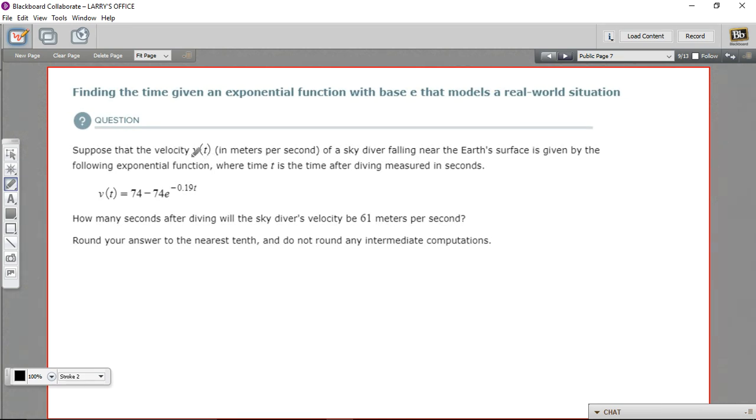It says, suppose that the velocity v(t) in meters per second of a skydiver falling near the Earth's surface is given by this exponential function, where t is the time after diving measured in seconds. So the velocity equals 74 minus 74 times e to the negative 0.19 times t power. So this equation is going to give us the speed at which someone is falling after a certain number of seconds, whatever we plug in for t.